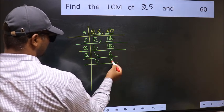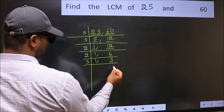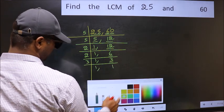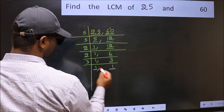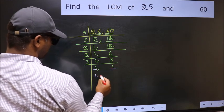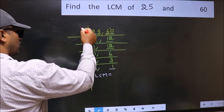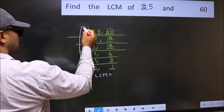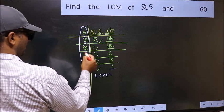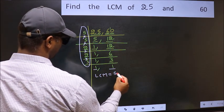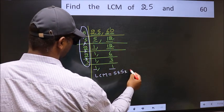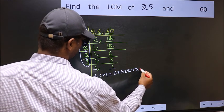Now we have 3. 3 is a prime number, so 3 times 1 is 3. So we got 1 in both places. Our LCM is the product of these numbers: 5 into 5 into 2 into 2 into 3.